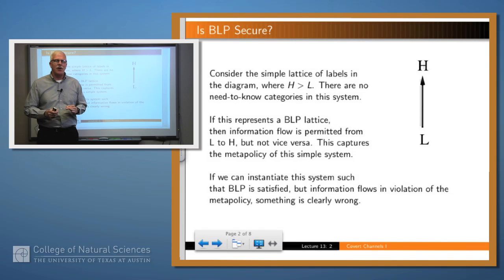In particular, we said that the set of labels within a Bell and LaPadula system form a lattice, which is an algebraic structure. Here's a very simple example of a lattice. Suppose we only had labels H and L, standing for high and low, and the meta-policy should be that information can flow from low to high, but shouldn't be allowed to flow from high to low. That's what we want to accomplish.